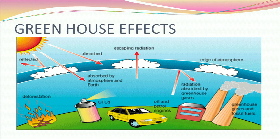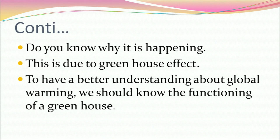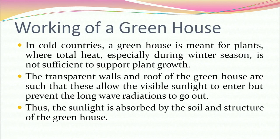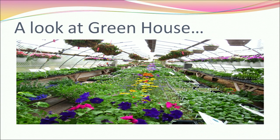To better understand global warming, we should know the functioning of a greenhouse. In cold countries, a greenhouse is used for plants where heat during winter is insufficient to support plant growth. The transparent walls and roof allow visible sunlight to enter but prevent long-wave radiation from escaping, so sunlight is absorbed by the soil and structure of the greenhouse.